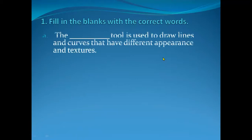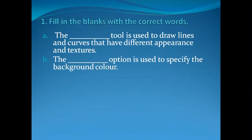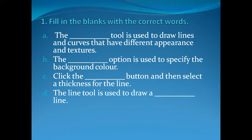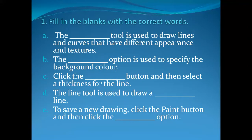Number A: The blank tool is used to draw lines and curves that have different appearance and texture. Number B: The blank option is used to specify the background. Number C: Click the blank button and then select the thickness of a line. Number D: The line tool is used to draw a blank line.